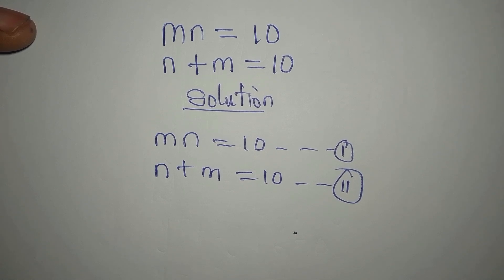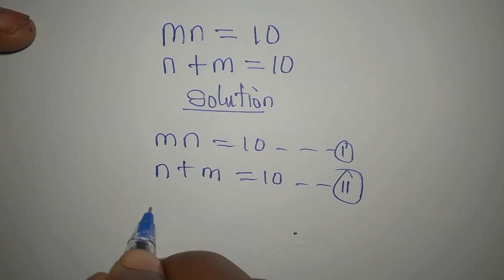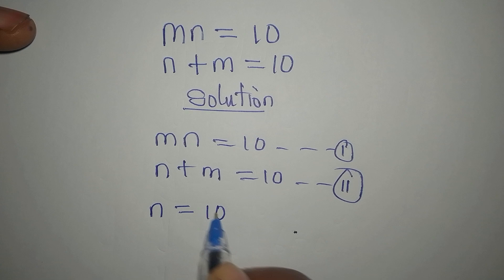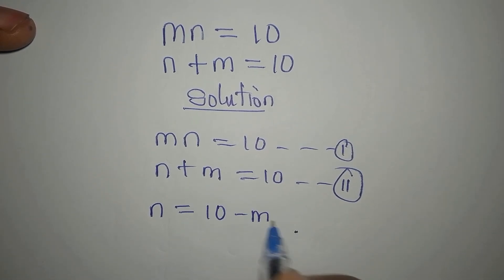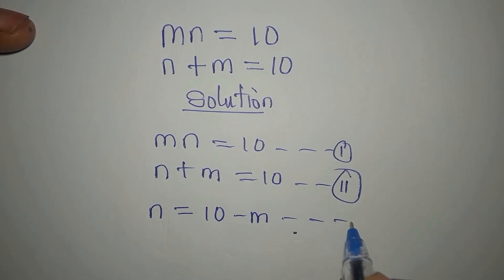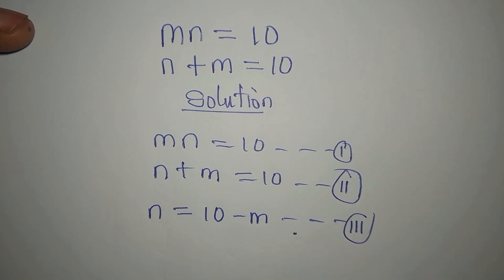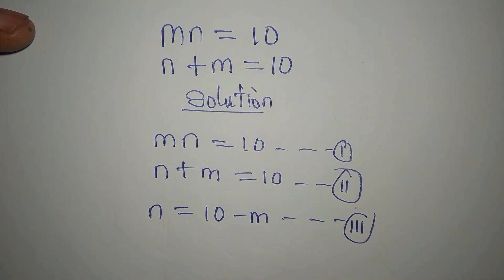So what do we do from here? From equation 2, what if we make n the subject? I'm going to have n equals 10 minus m. Let's call this equation 3 because we are still going to use that.